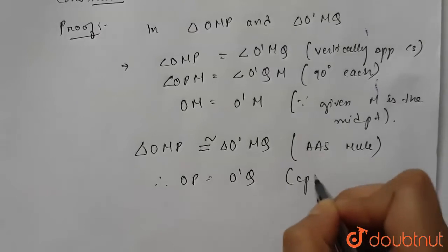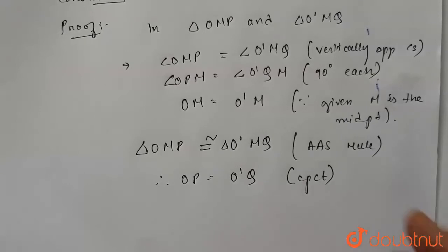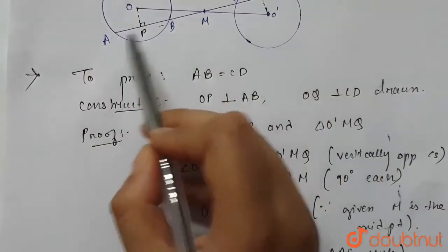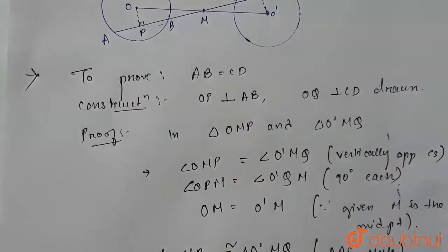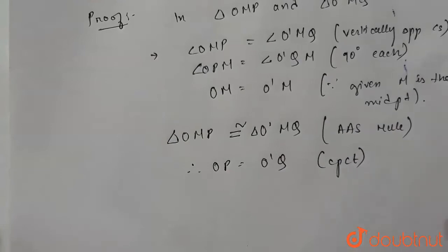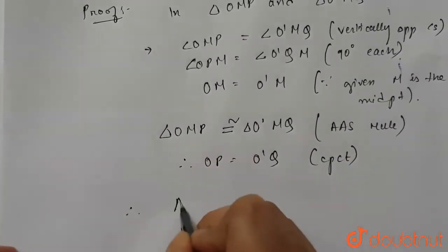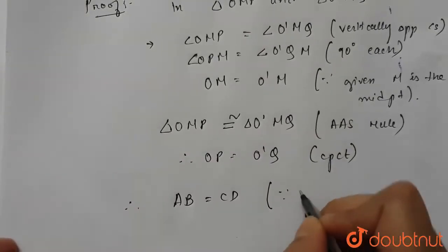Now we know that two chords of a circle or equal circles which are equidistant from the center are equal. So we have proved that OP and OQ are equal, which means that chord AB and chord CD are equidistant from the center. So from here we can say that therefore AB equals to CD. The reason, let's write, since we know that...